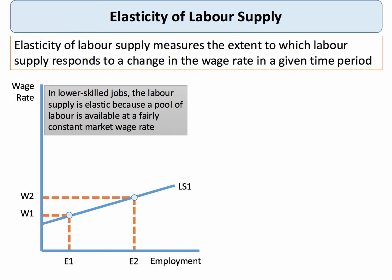Two types of labour supply curve coming up. In the first instance I've drawn my labour supply curve as fairly elastic, and we typically associate this where the barriers to entry into an occupation are fairly low. Perhaps the job is relatively low skilled or requires only entry level qualifications, and as a result the pool of labour available is going to be fairly big at a constant market wage rate. Think for example industries such as catering and cleaning where there's a large pool of potential workers who could conceivably join the labour force.